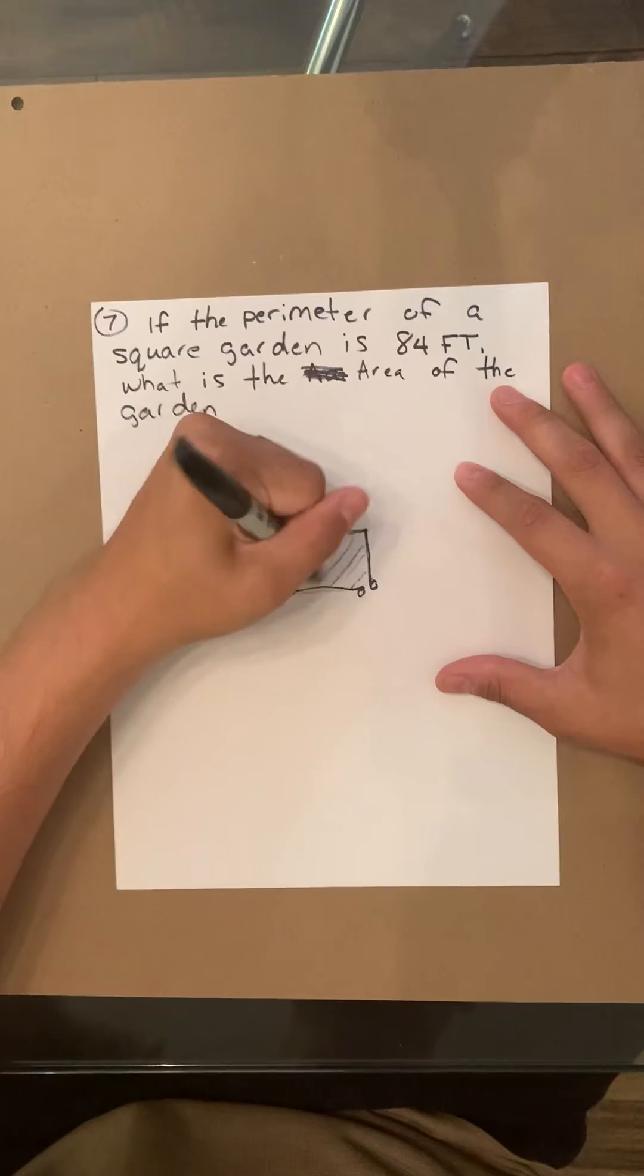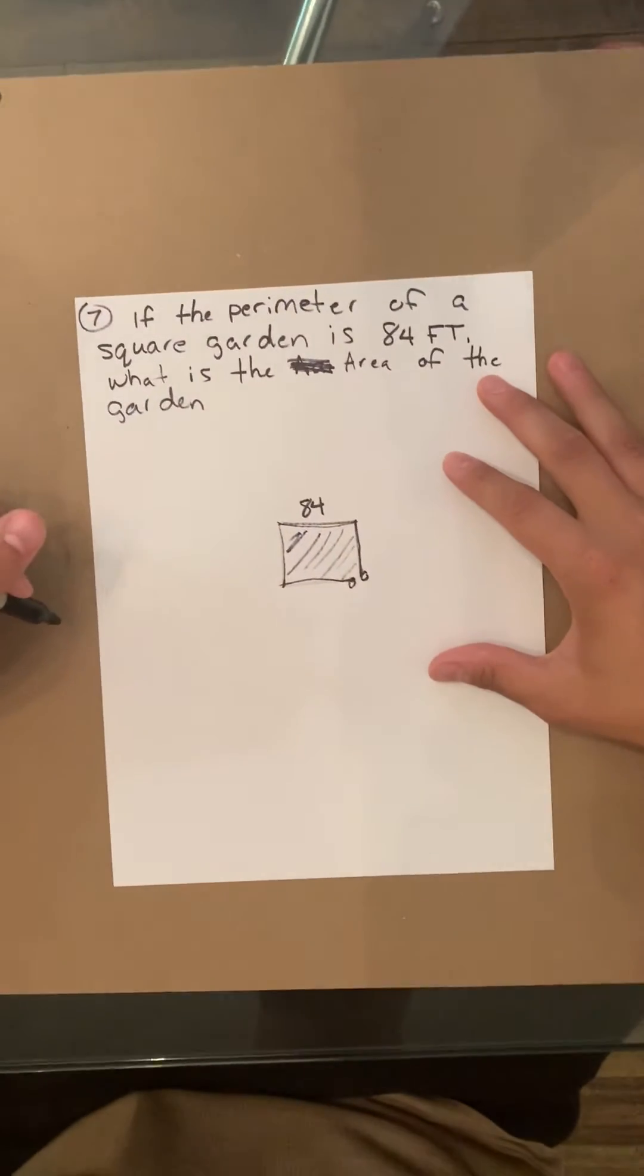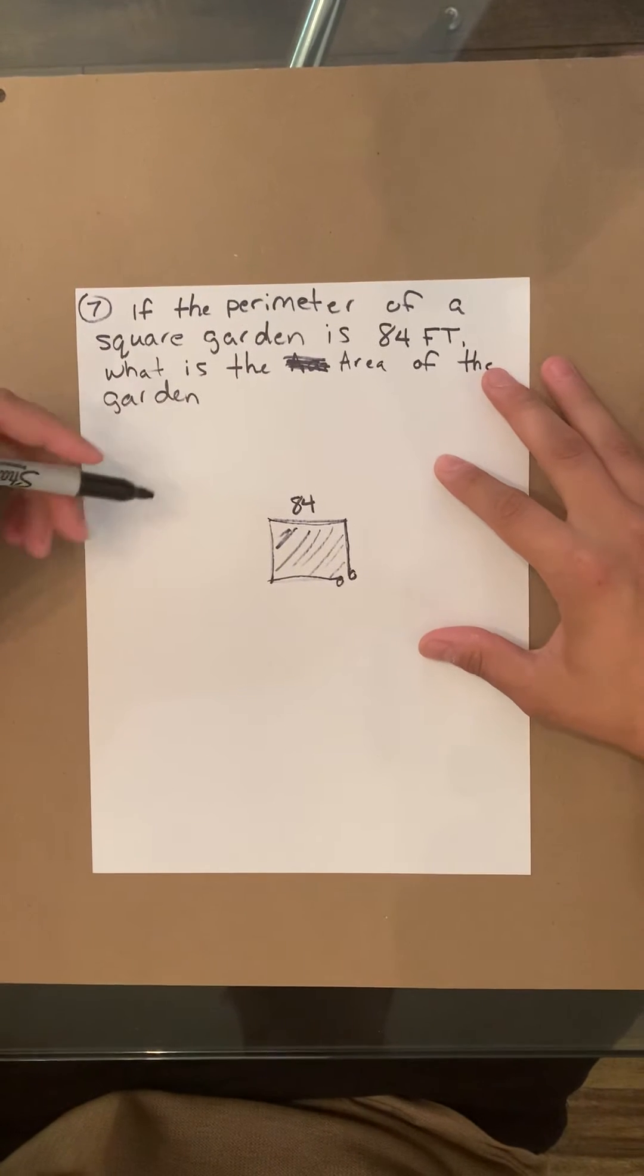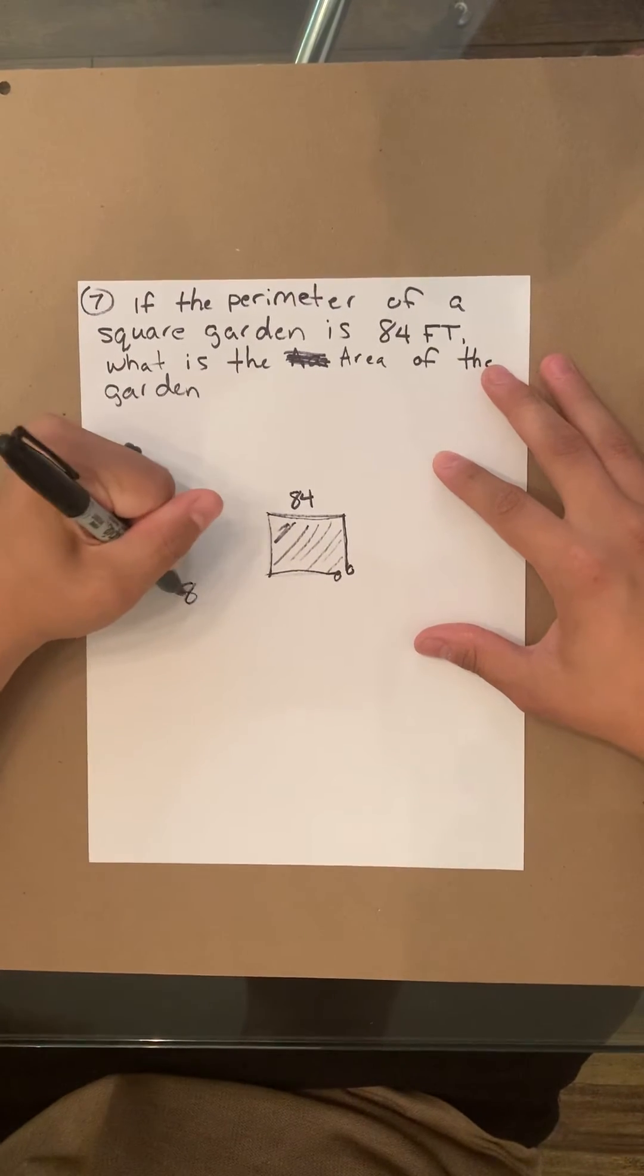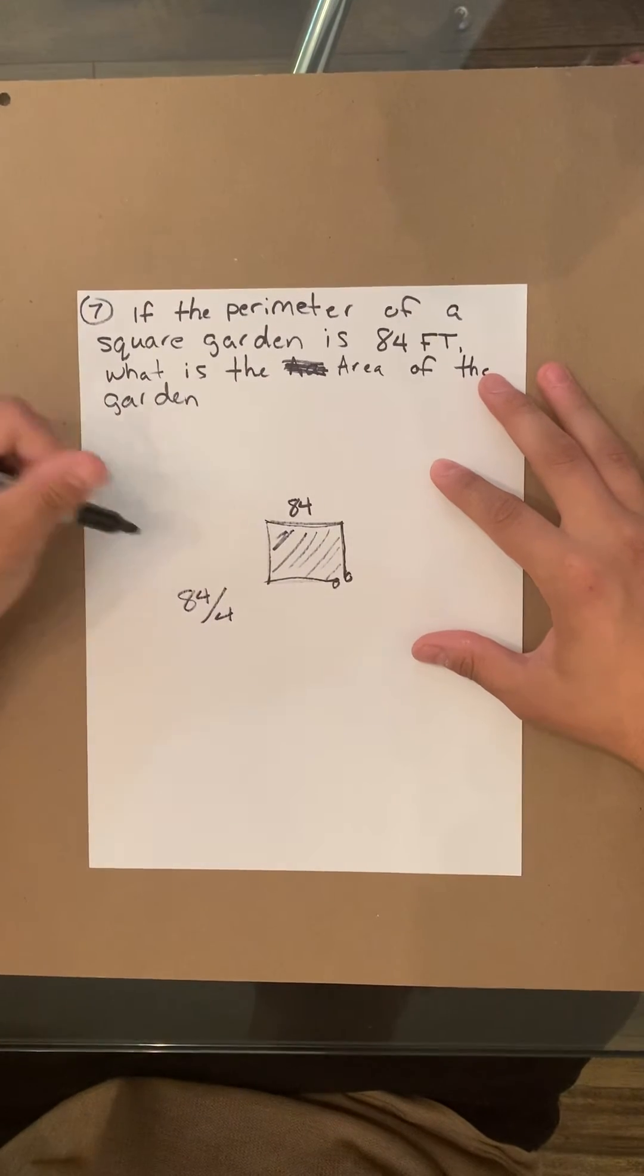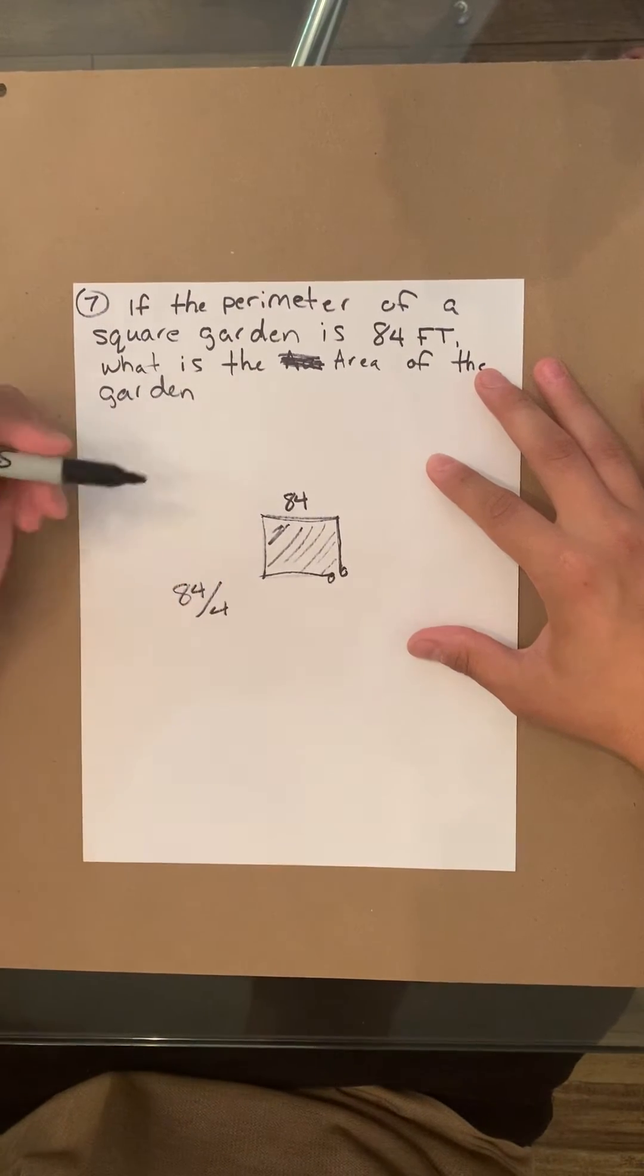Now we're trying to find out what the area is, right? So what we're going to do for this is it's pretty much just going to be 84 divided by 4. The way I got 4 is because I can see through the square, there are four equal sides.